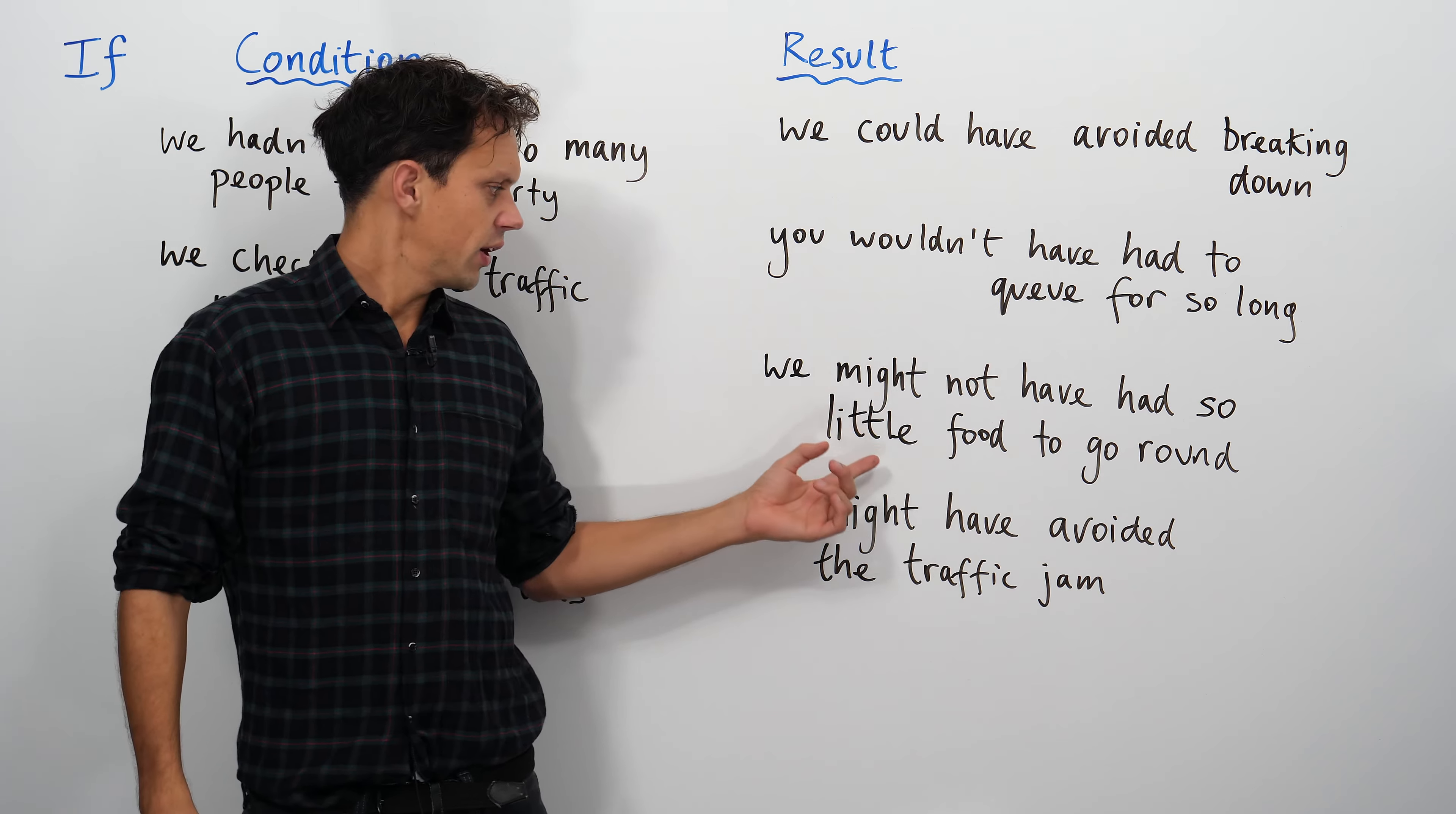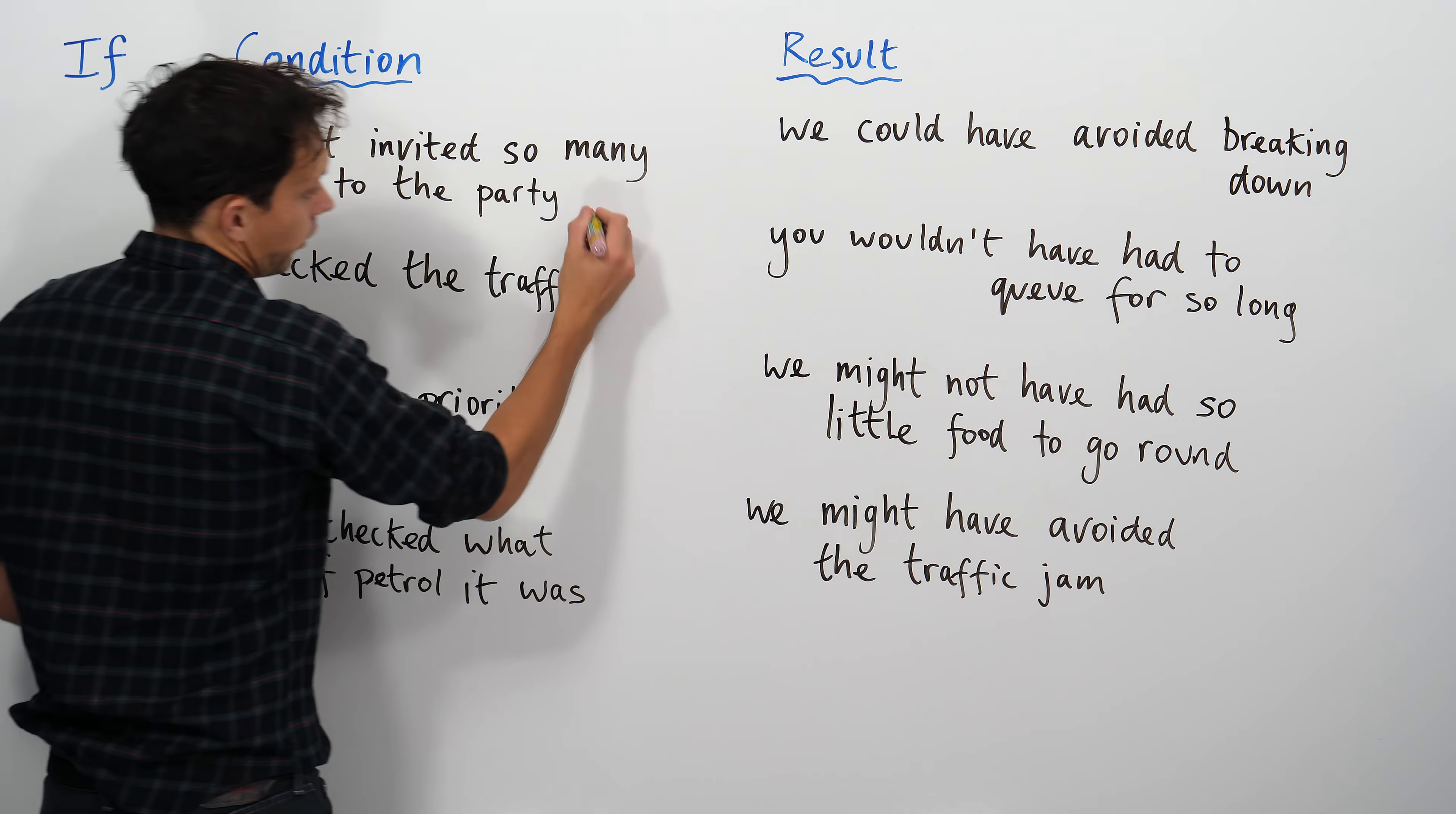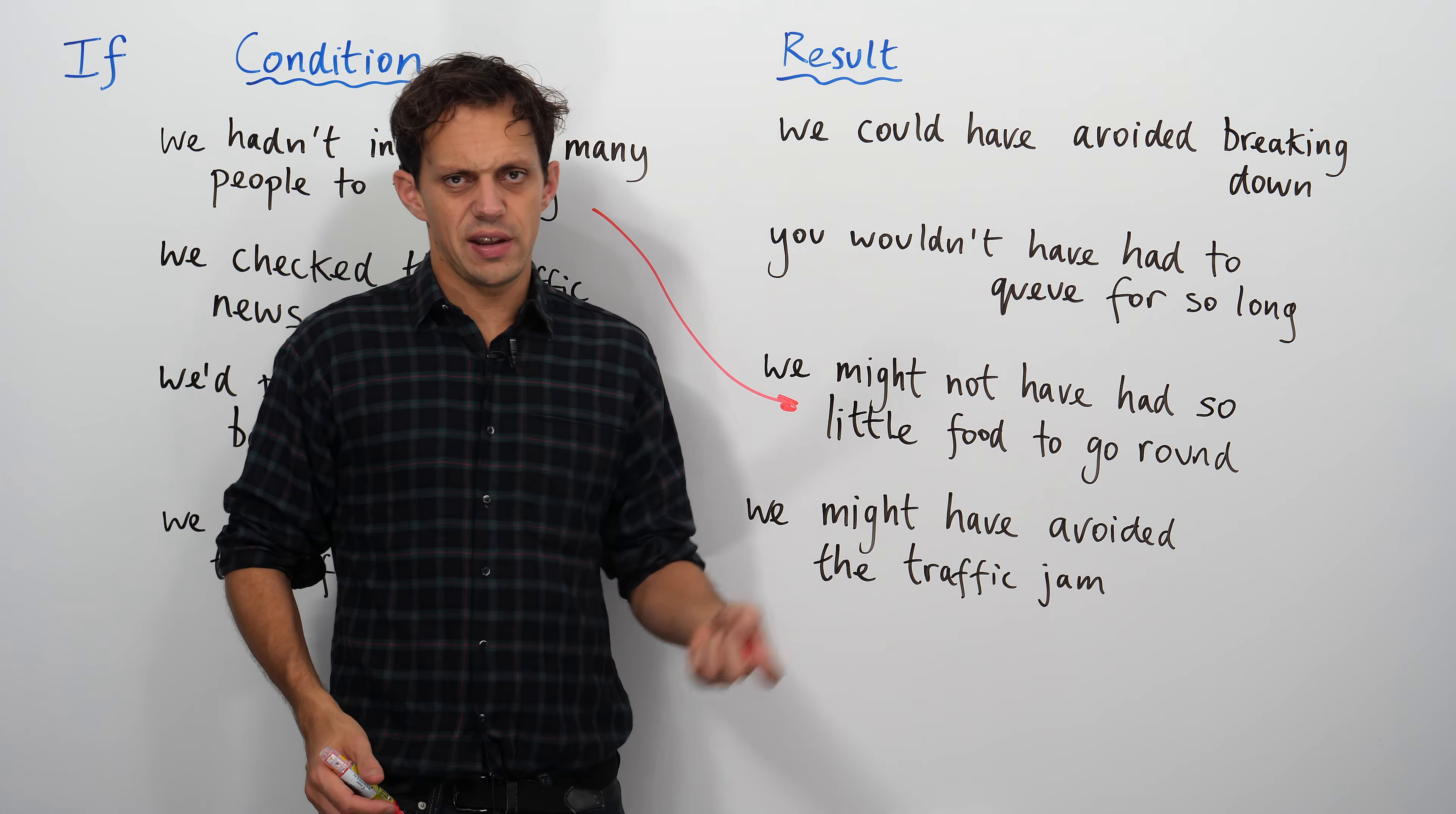We might not have had so little food to go around. So we're imagining a different past. We might not have had so little food. So this is going here. If there were less people, then people would have had more to eat, imagining a different past. What about the next one?